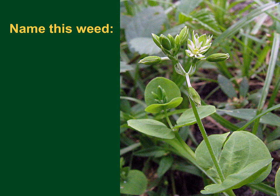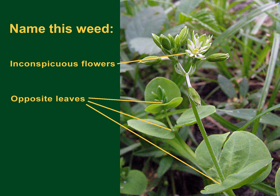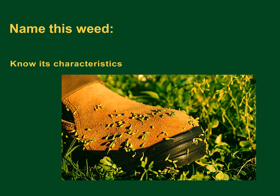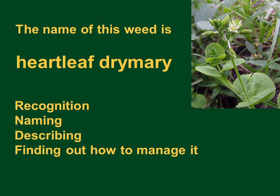Identification of a weed is the mental process of recognizing a weed as a specific plant and assigning it a name by which it is commonly known. Technical characteristics of the leaves and flowers help in weed identification. Stepping back and looking at a weed from a distance will help sight identification. Weed identification can be more than just naming a weed — it is the beginning to knowing everything about a weed, including how to manage it.